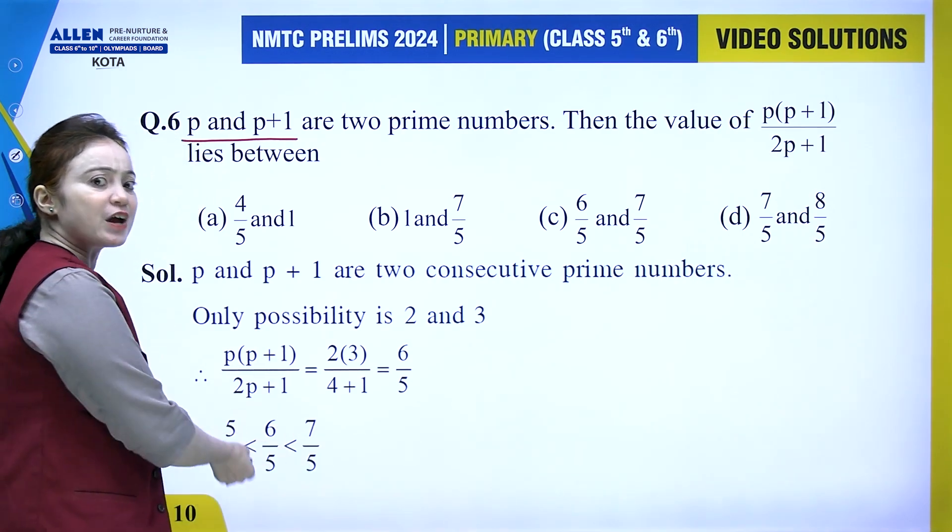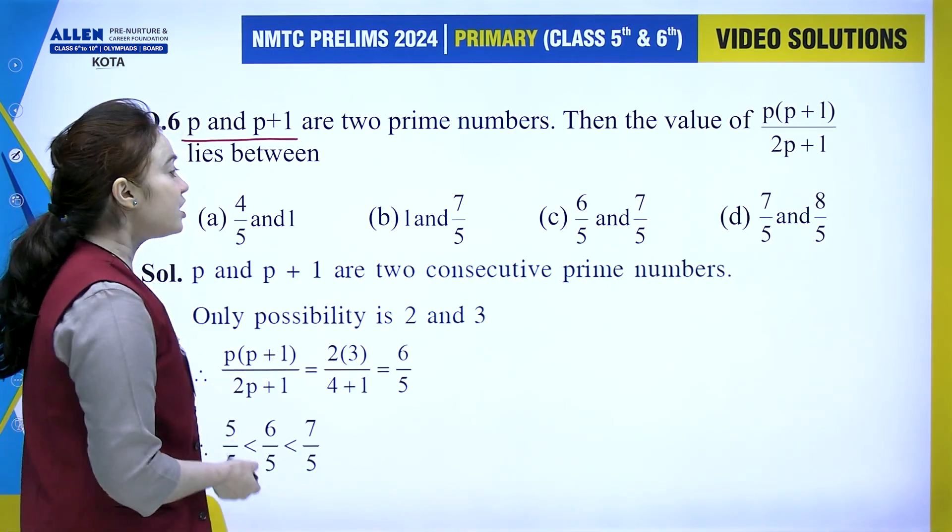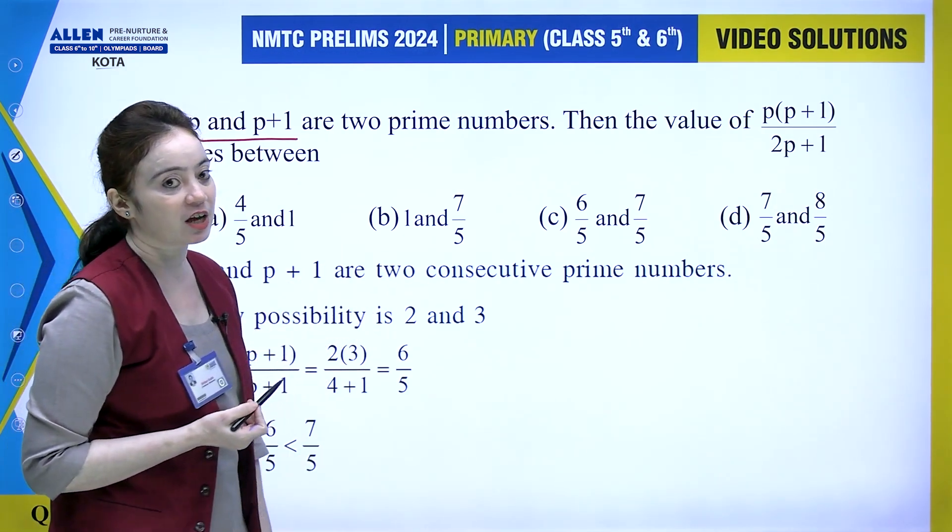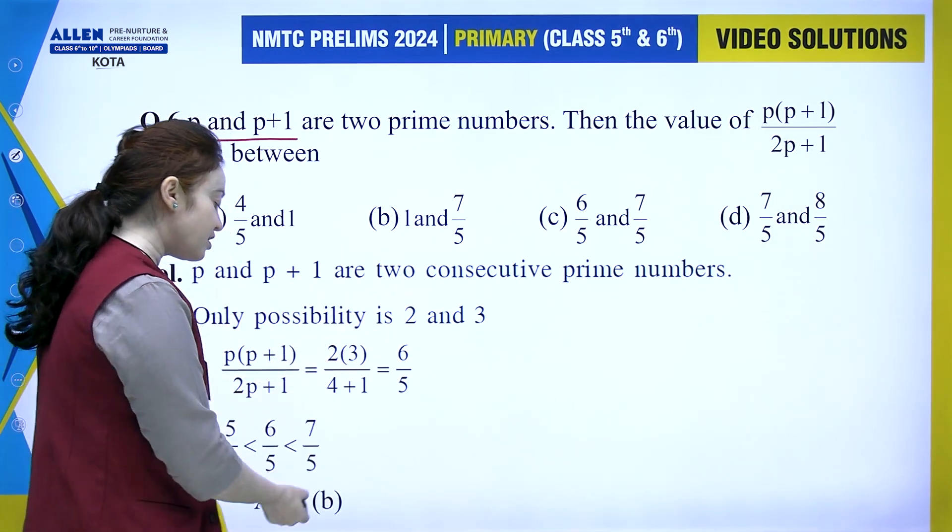6 by 5 lies between 5 by 5 and 7 by 5. What is 5 by 5? It is 1. So the value lies between 1 and 7 by 5. Clearly we can see that option number B is the correct answer.